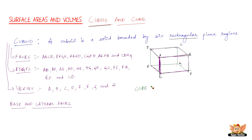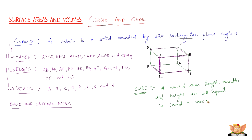Now let us go to cube. Cube and cuboid differ in just one way — a cuboid whose length, breadth, and height are all equal is called a cube. This looks more like a square box. So a cuboid whose length, breadth, and height are all equal is called a cube.